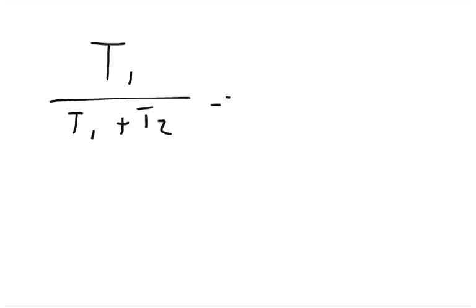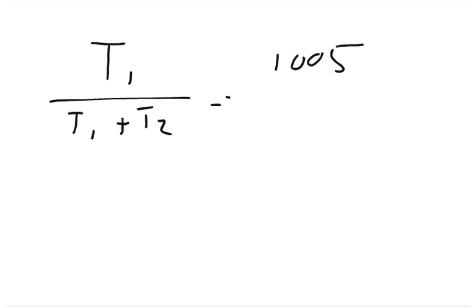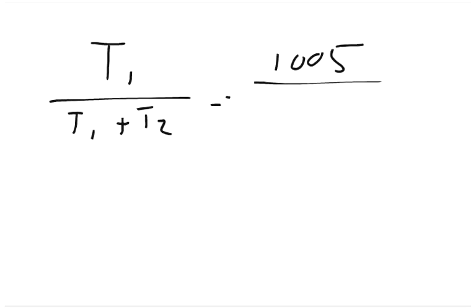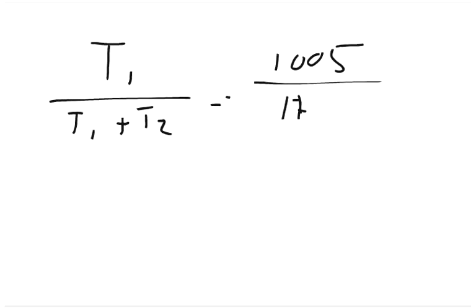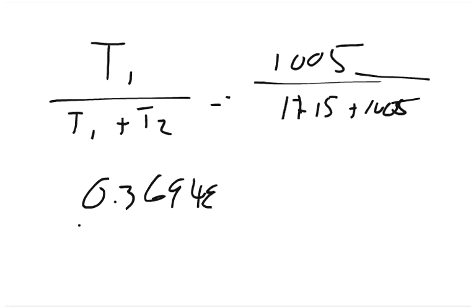We can set up our equation as T1 over T1 plus T2, or 1,005 over 1,715 plus 1,005. I'm going to simplify that to 0.369485 over 1.